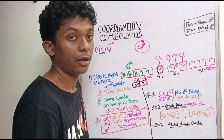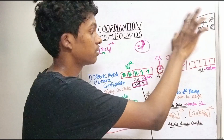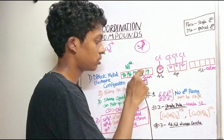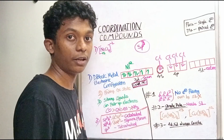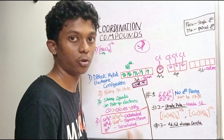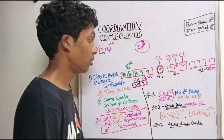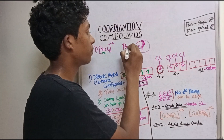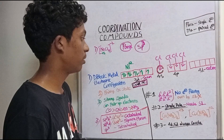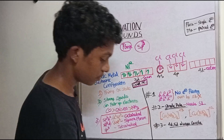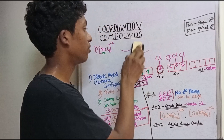Paramagnetic or diamagnetic? Looking at the d8 configuration with weak ligand (no pairing forced), there are unpaired electrons present. Therefore, [NiCl4]²⁻ is paramagnetic. It is an outer orbital, tetrahedral, paramagnetic complex.